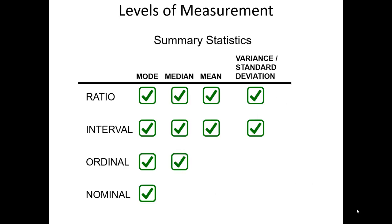One of the ways to understand the relative advantages of the four different levels of data is by understanding some of the summary statistics we can calculate based on the level of data we have. For all four levels of data, we can always calculate the mode. But if we want to calculate the median — the place where the dataset is split into two different halves — we must have at least ordinal-level data. If we actually want to calculate the mean, we must have equal distance between each one of the values, so interval and ratio data can easily calculate the mean.